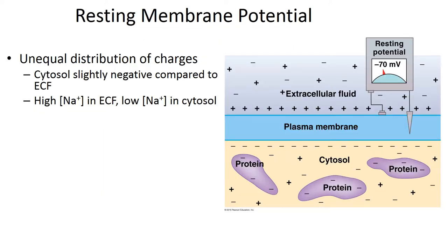Before we get into the neuromuscular junction and the sliding filament model of contraction, we need to talk about the resting membrane potential of a cell. The resting membrane potential is an unequal distribution of charges on either side of the plasma membrane. We can measure it using a voltmeter. In general, there is a high concentration of sodium in the extracellular fluid and a low concentration of sodium in the intracellular fluid or cytosol. This difference in ion distribution contributes to the resting membrane potential and is maintained by the sodium-potassium pump.